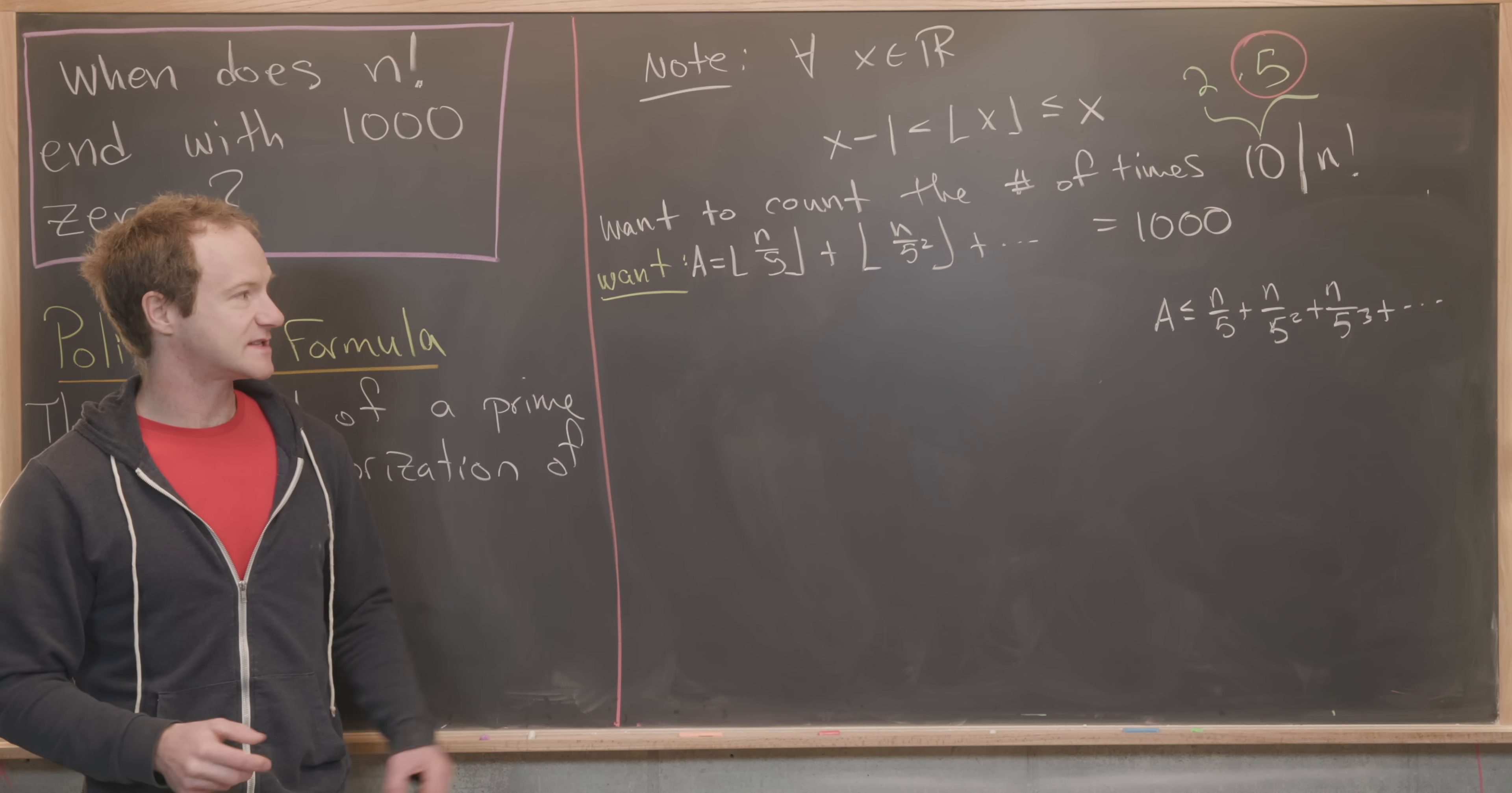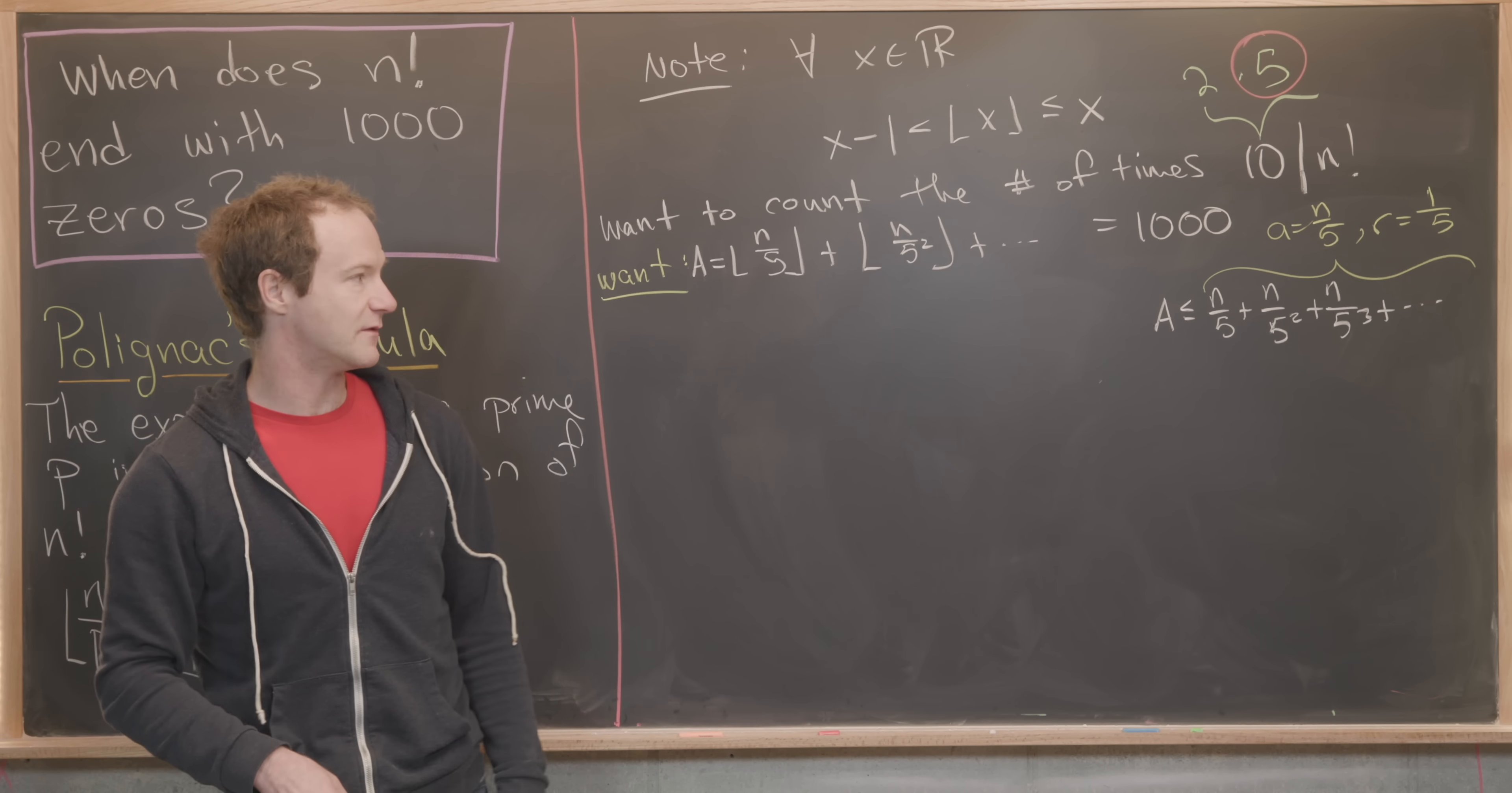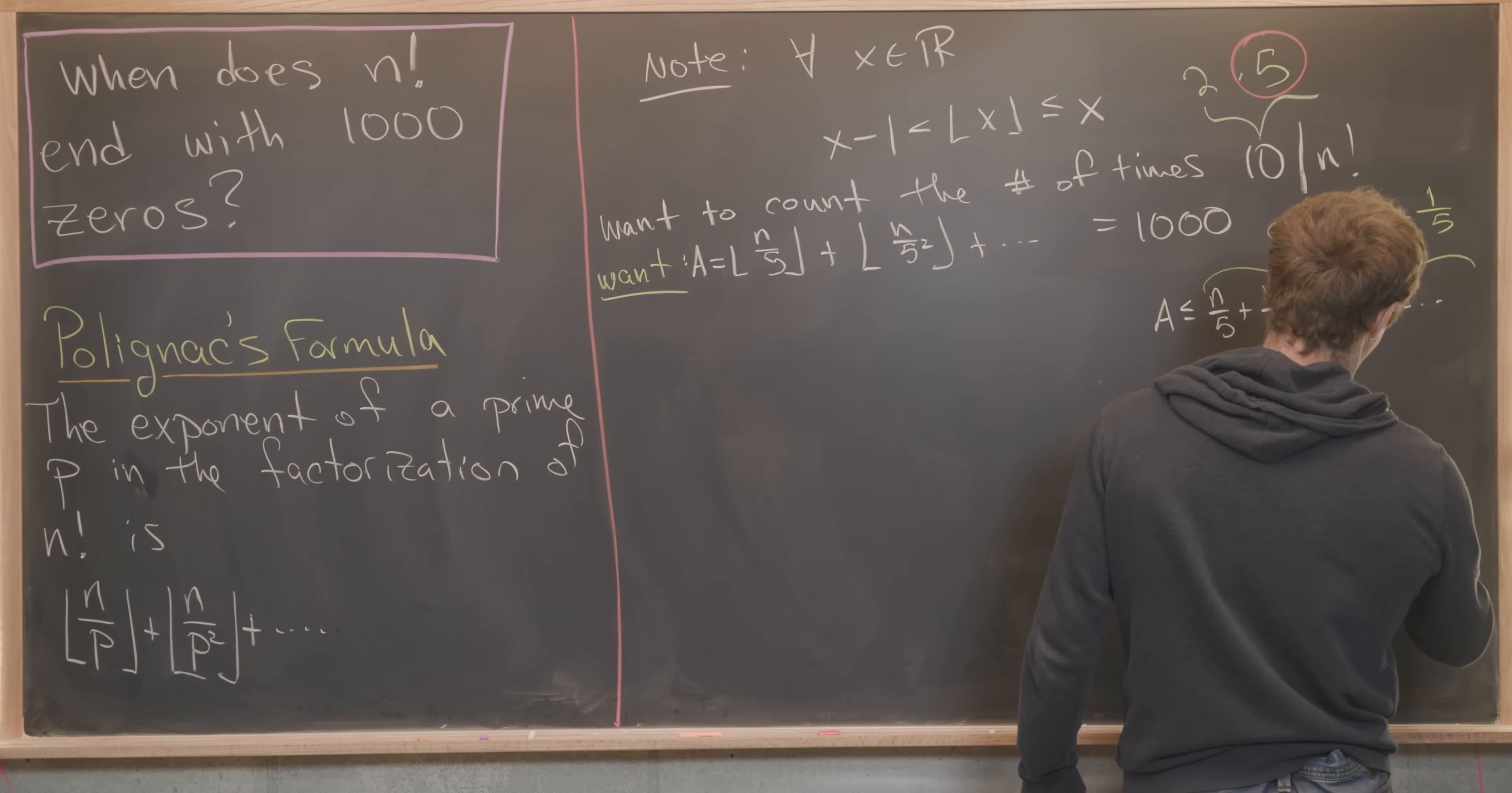We can see that's an infinite geometric series, where the starting term, which is sometimes called little a, is n over five, and the common ratio, sometimes denoted by r, is one over five. We've got a nice formula for the sum of the geometric series. That is n over five over one minus one over five, in other words, a over one minus r. Then it's pretty easy to calculate from there that we need n over four.